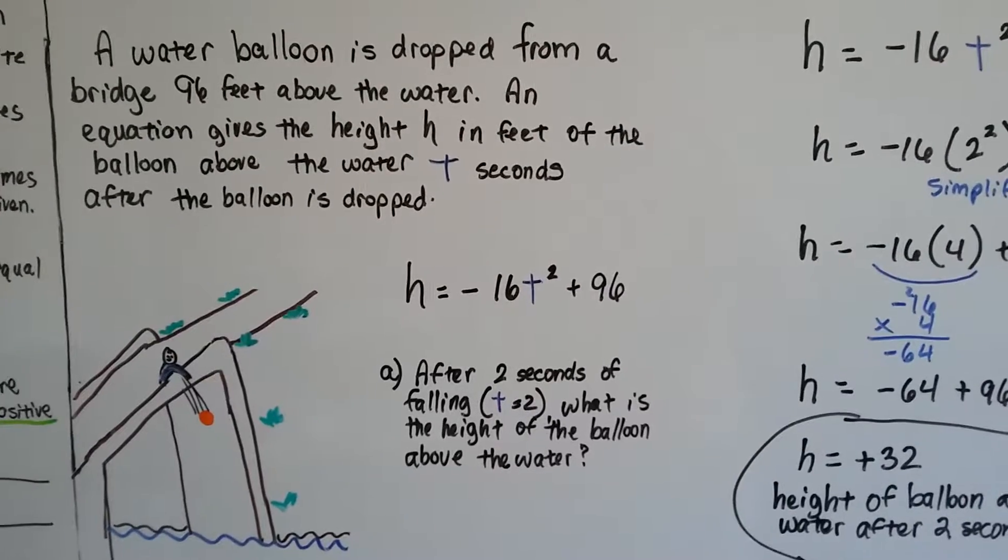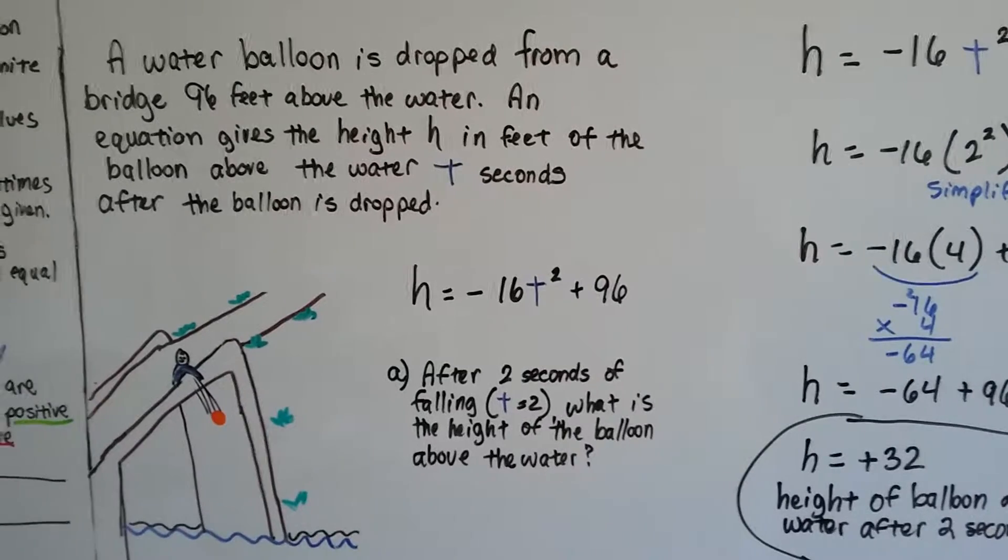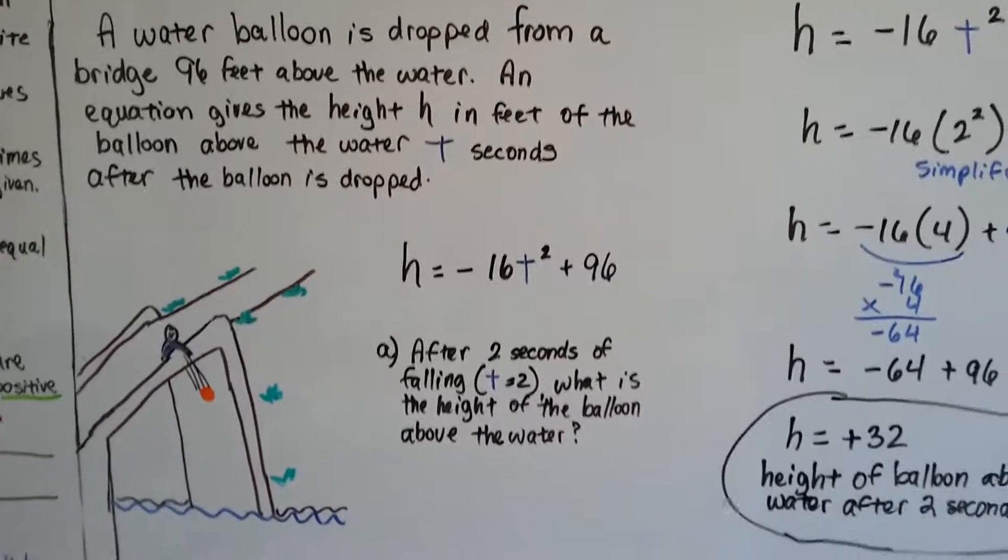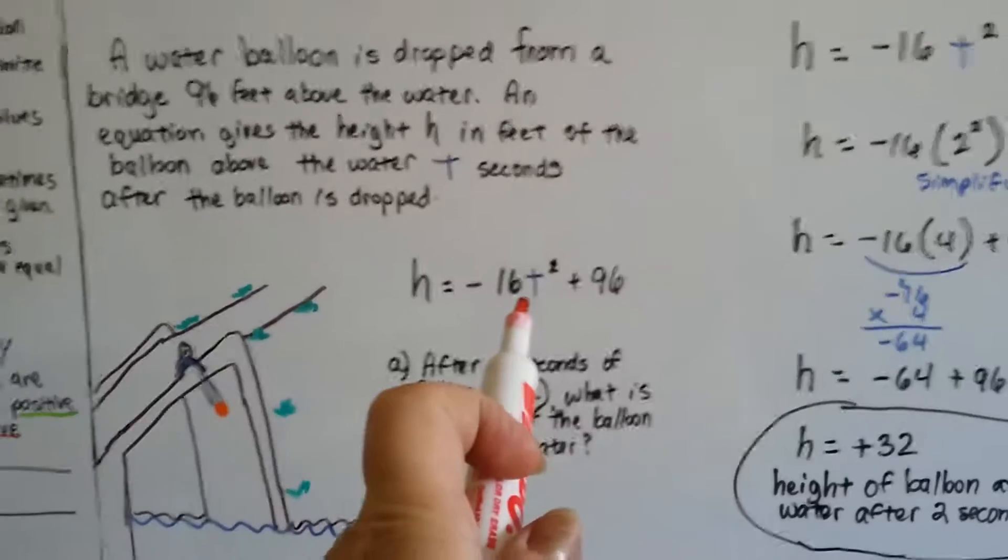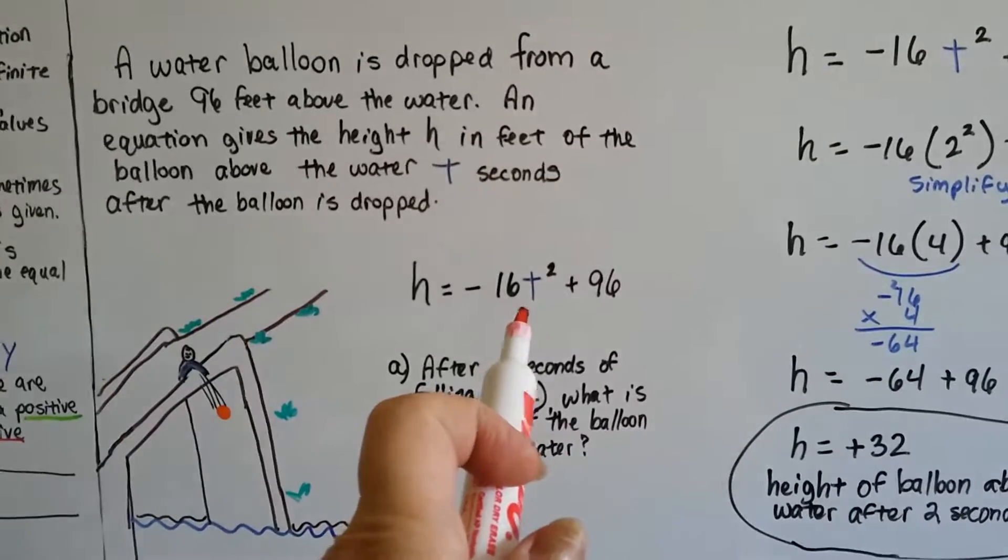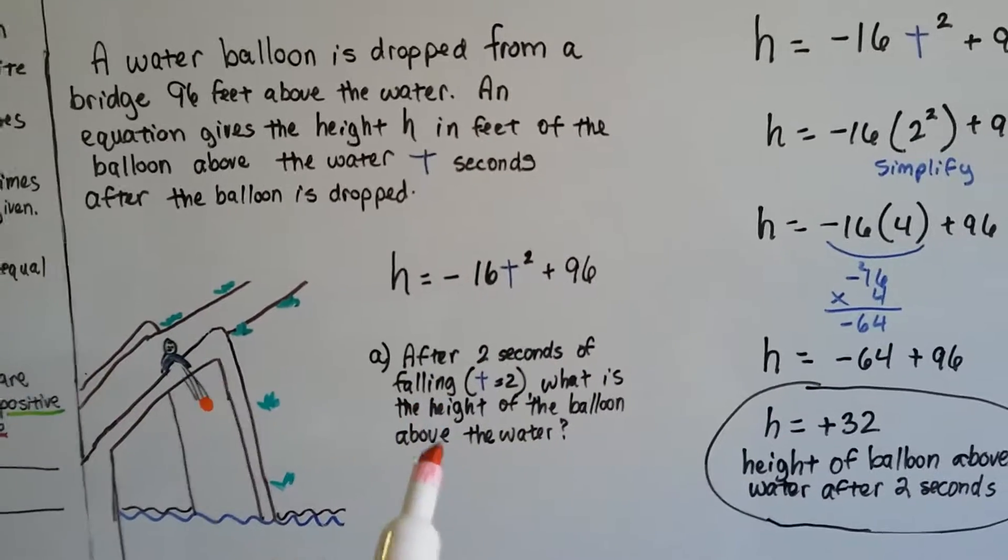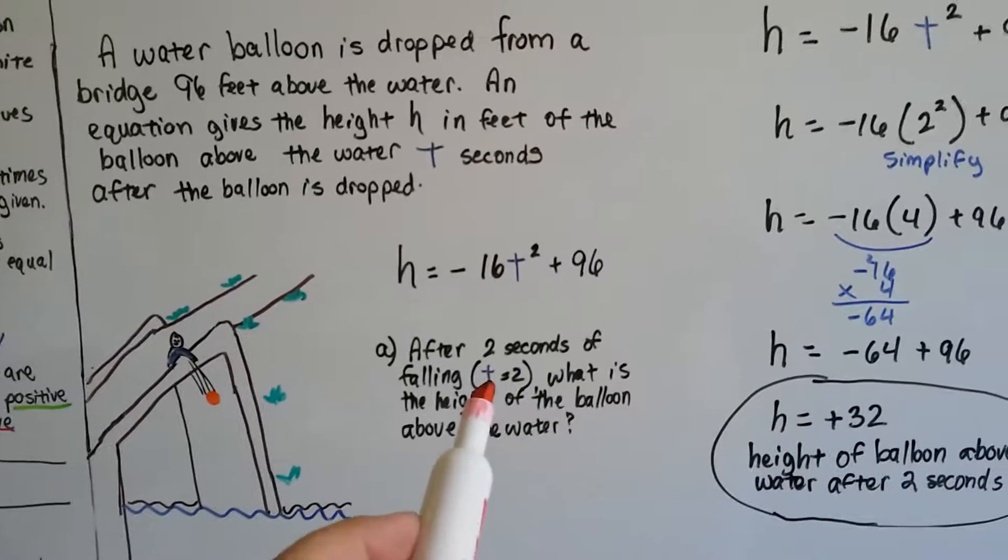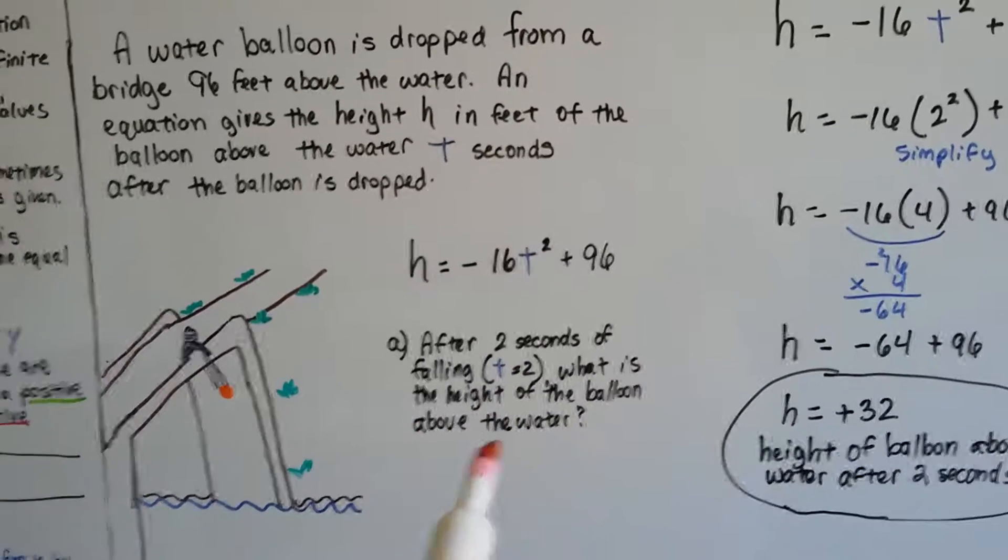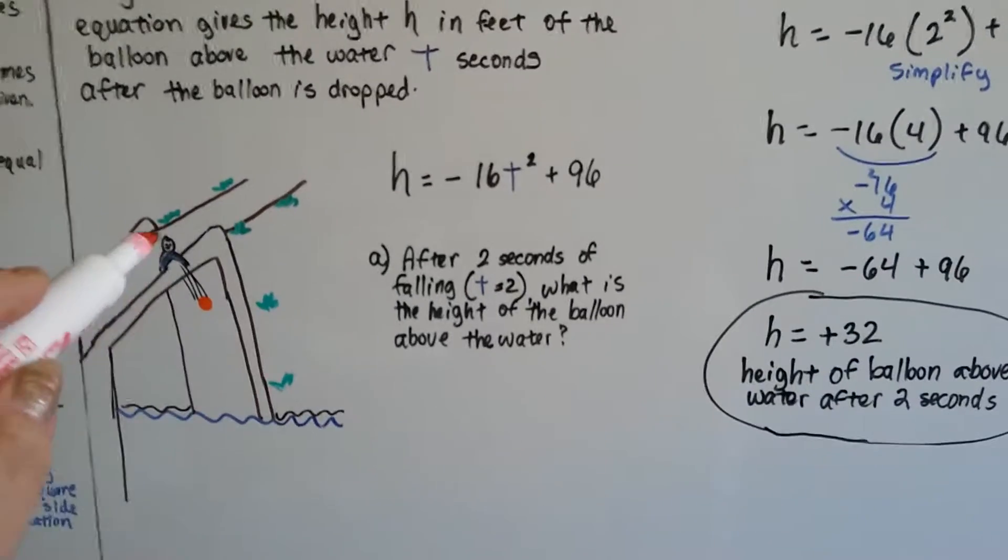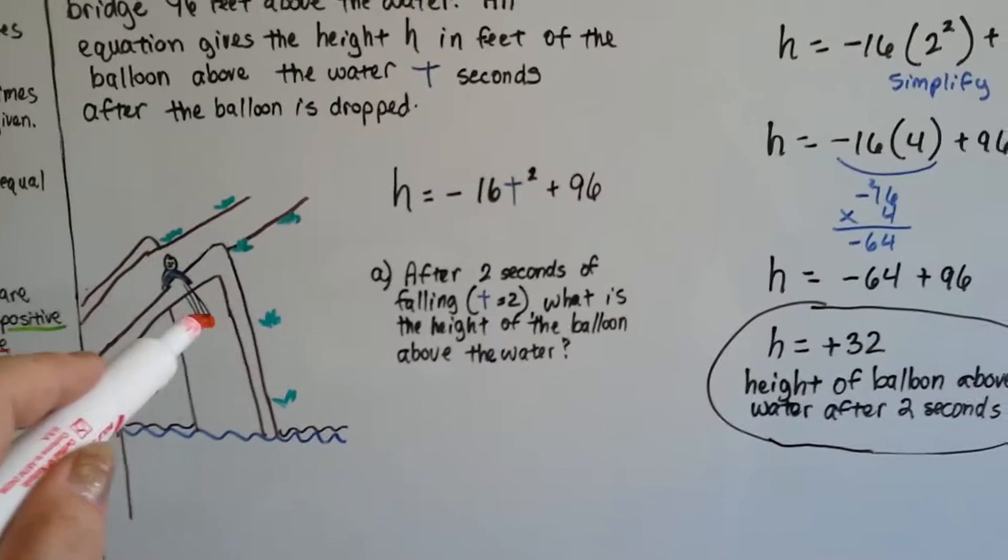So h is the height in feet that the balloon is above the water, and t represents how many seconds after the balloon is dropped. So after two seconds of falling, t equals two, what is the height of the balloon above the water? So here he's throwing the balloon, and it's been two seconds.